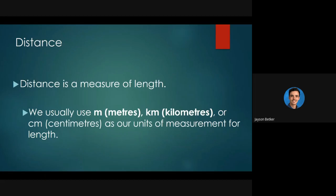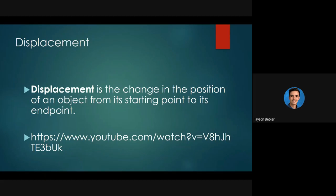Displacement is not a measure of length like distance is. It's a measure of the change in the position of an object from its starting point. The best way I like to think about this is imagine you're running the 400 meter race in track and field. If you run the 400 meter race, you have ran a distance of 400 meters, but your starting position is the exact same as your ending position because you ran in a circle.